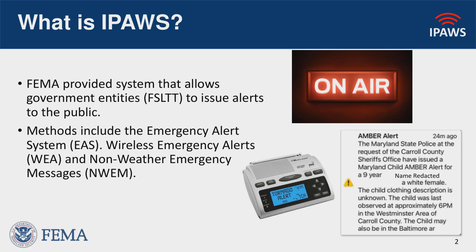Messages can be sent via radio and TV — that's known as the Emergency Alert System — as well as to cell phones, known as Wireless Emergency Alerts, and to NOAA weather radio. Those are non-weather emergency messages. We do not issue tornado warnings or flash flood alerts at the local level; those come from the National Weather Service.